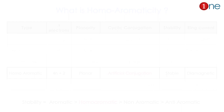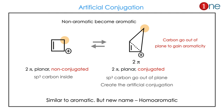Artificial conjugation means that to create aromaticity, one atom goes out of plane to promote aromaticity — meaning the non-aromatic system becomes aromatic. The system moves towards stability. If you look at the starting material, it has 2 pi electrons, is planar, and is non-conjugated with an sp3 carbon inside.